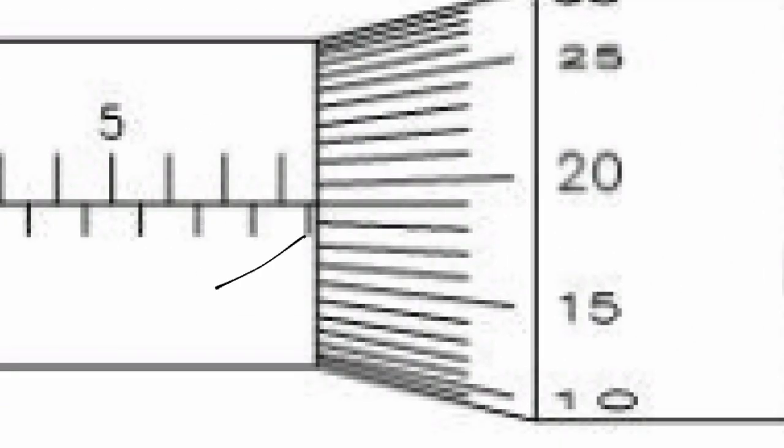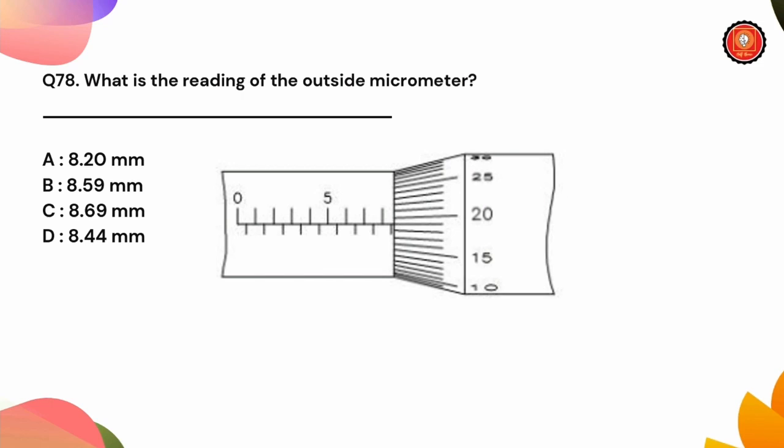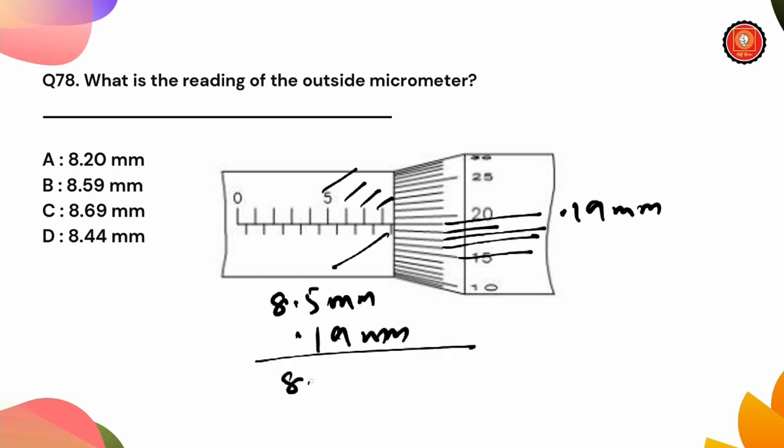Here we have the main scale at 1.5mm. Here is 8.5 mm on the main scale. The division line matches up at 15, 16, 17, 18, 19. So the final measurement is 8.5 mm plus 0.19 mm, giving us 8.69 mm. That is option C.